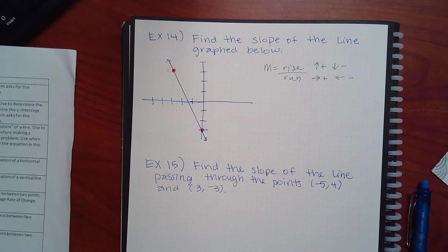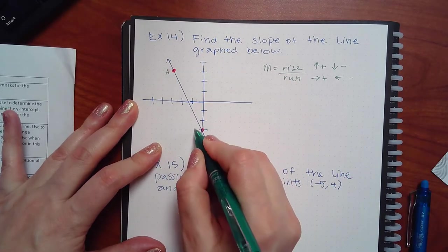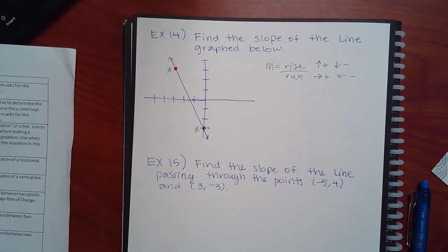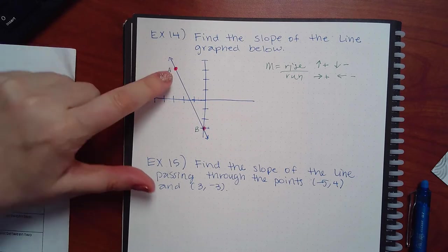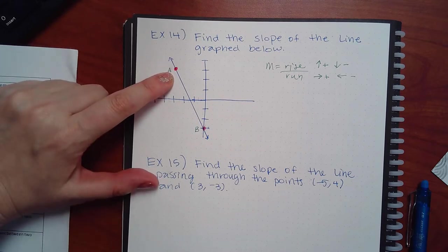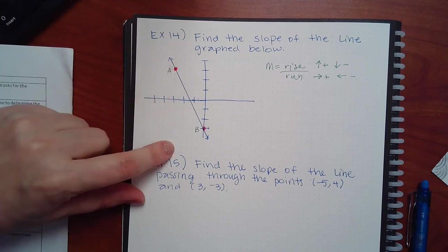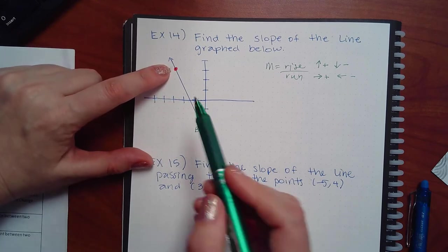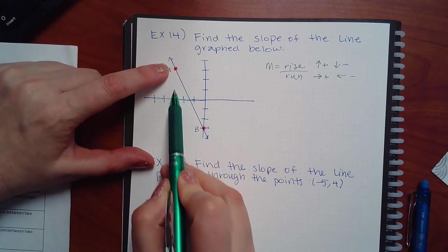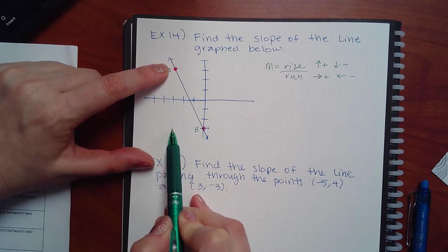I'm going to call this point A and this point B. There are two ways to go about it: you can count from A to B or from B to A. I want to do both so you realize it doesn't matter. Starting at A, would I go up or down to get to B? Down — one, two, three, four, five, six units.